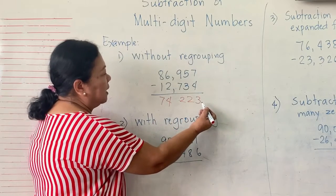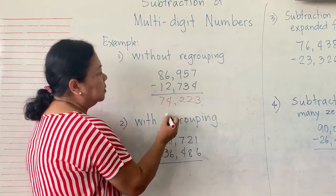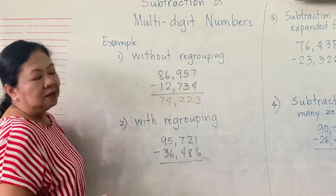And then count 3 digits from the right: 1, 2, 3. Separate the thousands and the hundreds.